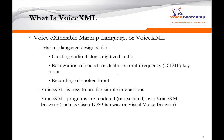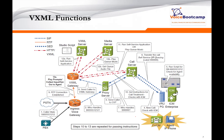VXML programs are rendered or executed by a browser — that browser could be an IOS gateway, 2800 series or 2900 series, or a virtual voice browser, which is basically replacing the IOS gateway into a virtual machine. The VXML server can be a separate server and will communicate with a VXML gateway, but instructions are sent from the CVP server to the VXML gateway. The VXML gateway then contacts the VXML server for further processing. When prompts like audio files or grammar files are involved, the VXML server communicates with the media server where all audio prompts are located.